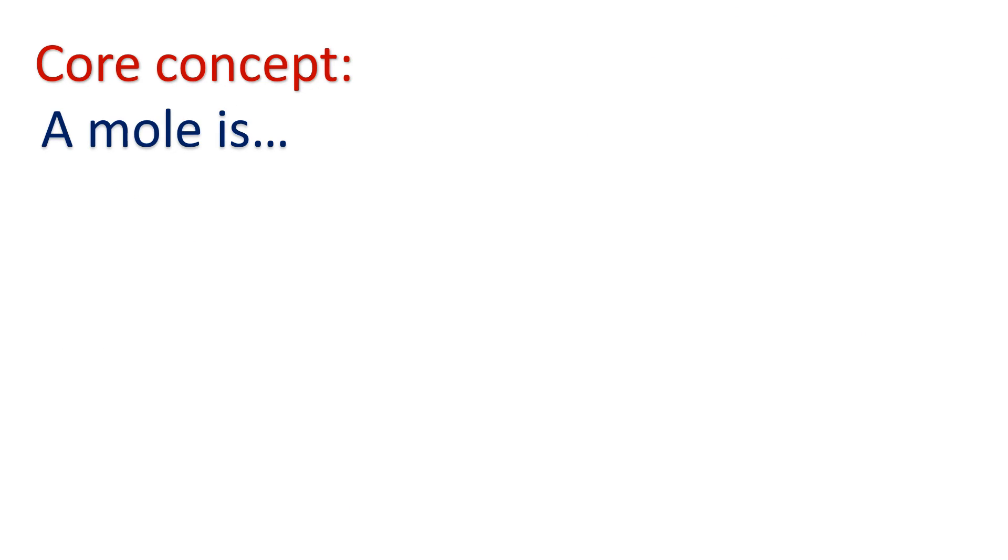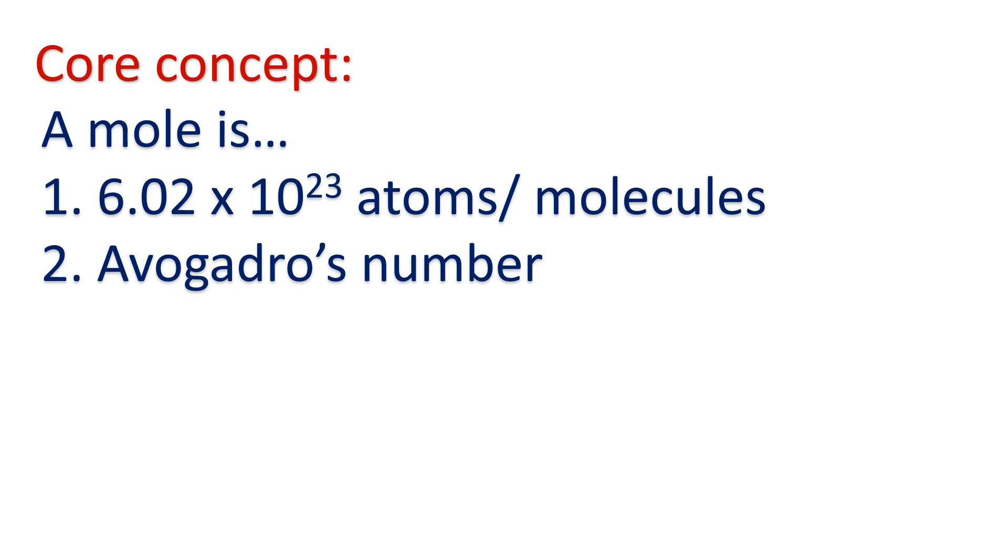So let's add to our core concept then. We said a mole is 6.02 times 10 to 23 atoms or molecules. We said that number is known as Avogadro's number or Avogadro's constant, and the third one we're going to add: what is a mole? A mole is the molecular mass in grams. So now you could turn to your periodic table, you could look at that larger of the two numbers in each of those boxes, and you would recognize that that's a molecular mass. If you put it in grams, you know the mass of one mole of that element. Fantastic, hey?